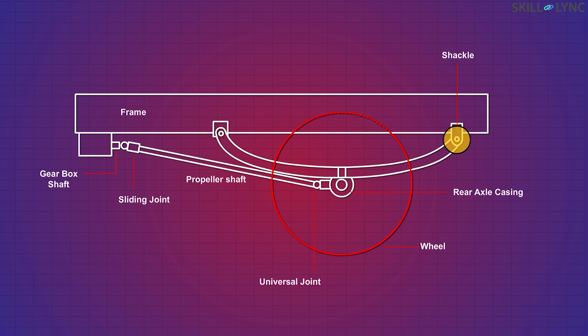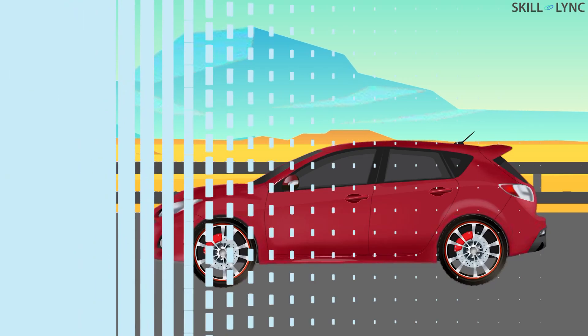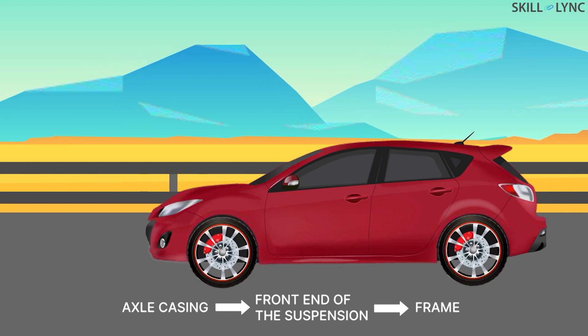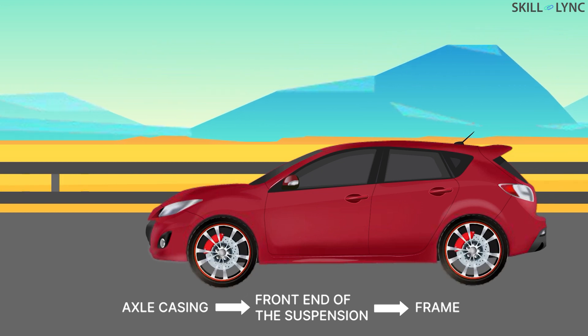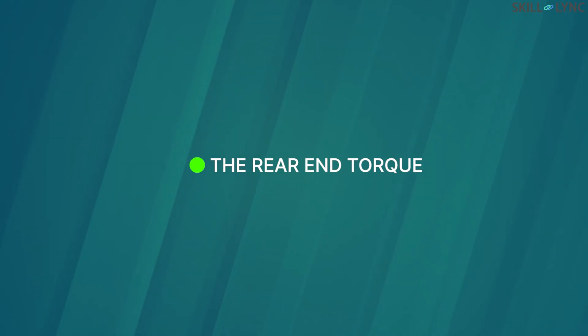When the vehicle is moving, the driving force is transferred from the axle casing to the front end of the suspension and then to the frame. Both the rear end torque and the driving force are opposed by the springs.